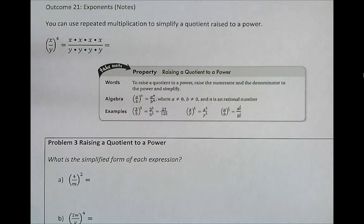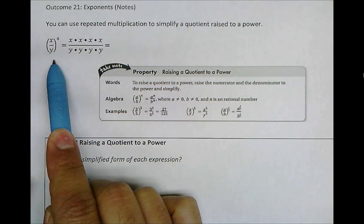In the next example of 7-4, we are raising a quotient to a power, which is similar to raising a power to a power. Again, let's start by understanding the expanded form to come up with a shortcut.